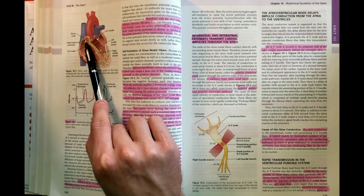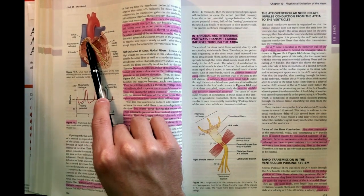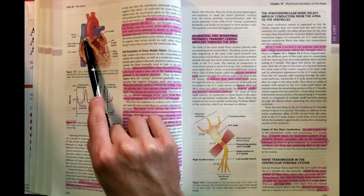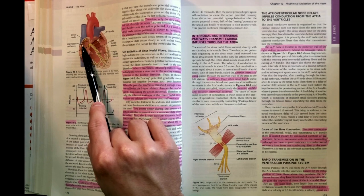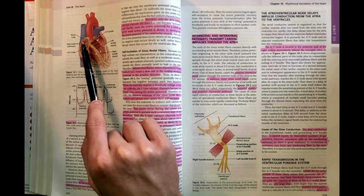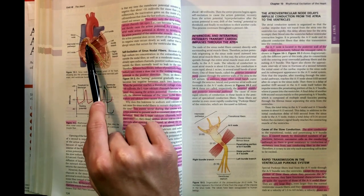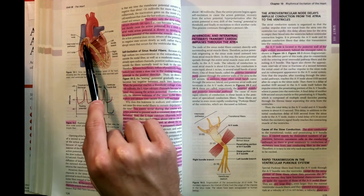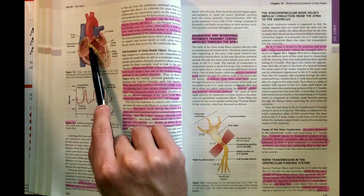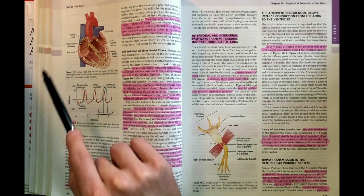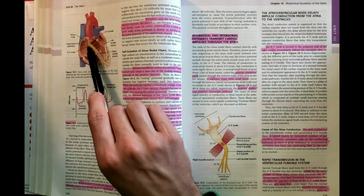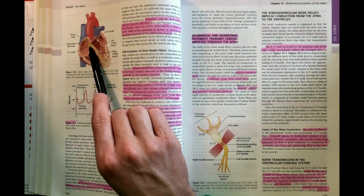Once the sinus node sends off its signal from the right atrium, it spreads to nearby atrial muscle and through these highways—the internodal pathways. We have three: anterior, middle, and posterior, which all send the signal around the atrium so our two atria contract at the same time, and then they all congregate into the AV node.